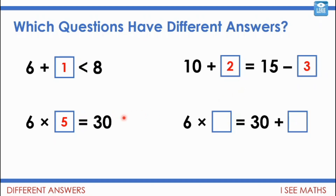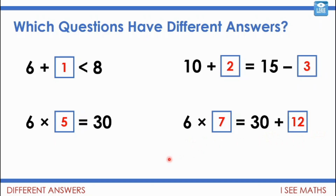You might notice what's the same or different about these two number sentences. Let's see: 6 times 6 equals 30 plus 6 — that's one way. But I could also do 6 times 7 and just have another lot of 6 added to the 30. So 6 times 7 is 42, and 30 plus 12 is 42 as well — they're the same. So this question can be answered in different ways.